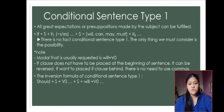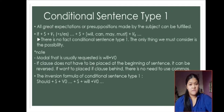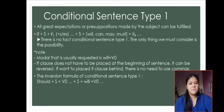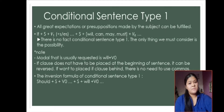I have two notes for conditional sentence type 1. First, the modal usually used is 'will + verb 0.' Second, the if clause does not have to be placed at the beginning — it can be reversed, and if placed behind, there is no need to use a comma. Also, conditional sentence type 1 has an inversion form: should + subject + verb 0 + subject + will + verb 0.